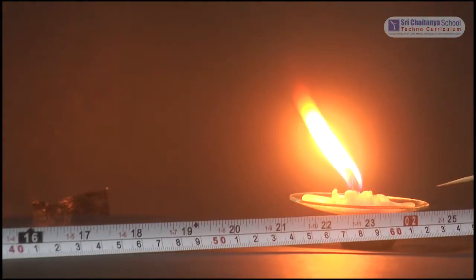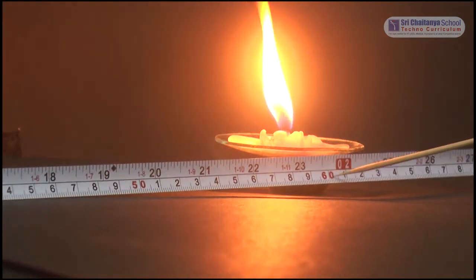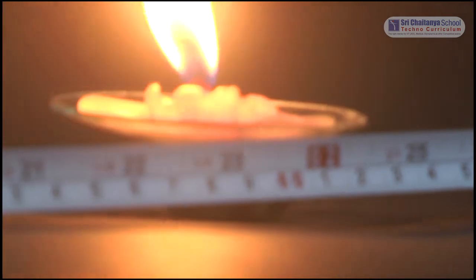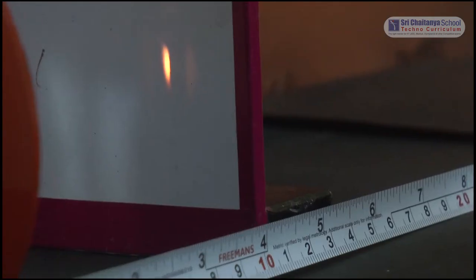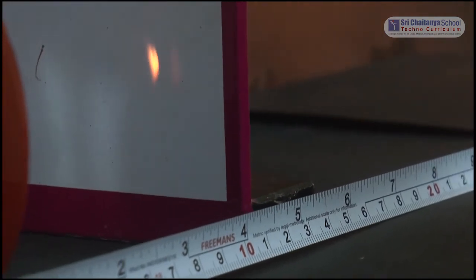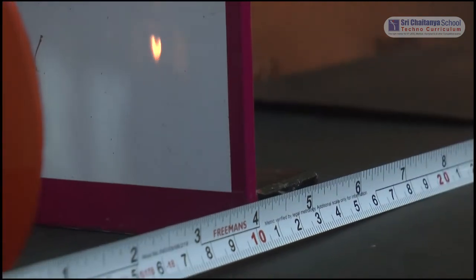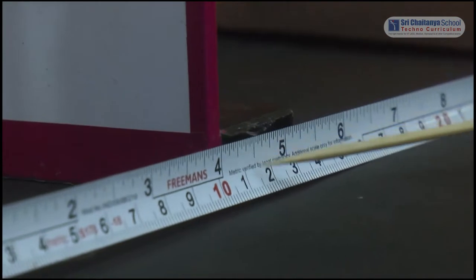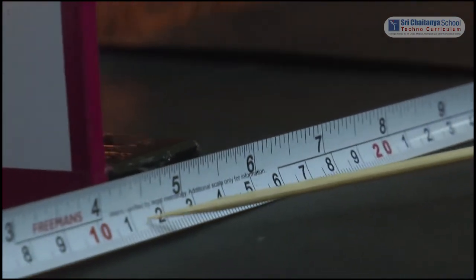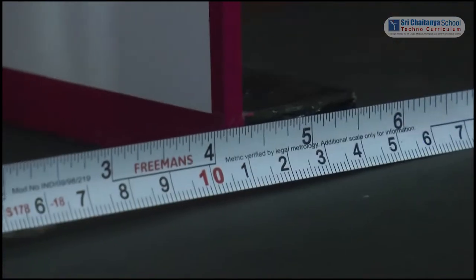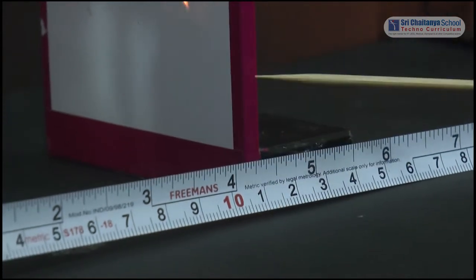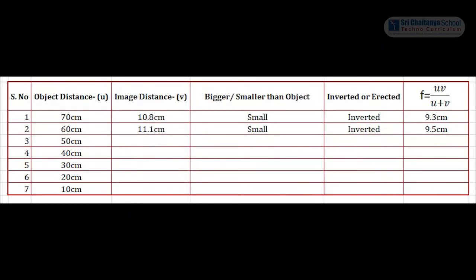Now move the object a little forward and keep it at nearly 60 cm. The object is placed at 60 cm. Again, we have to find the image by adjusting the screen back and forth until we get a sharp image. The image distance is about 11.1 cm. Object distance 60 cm, image distance 11.1 cm, and the focal length will be 9.5 cm from the formula.